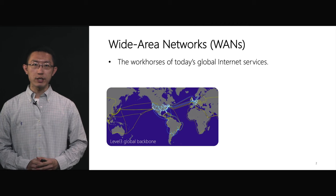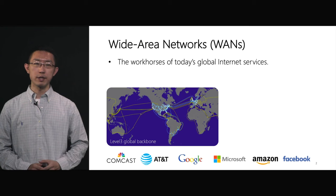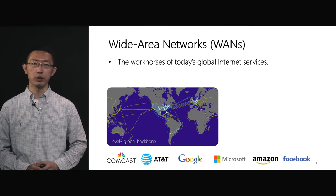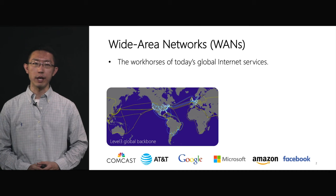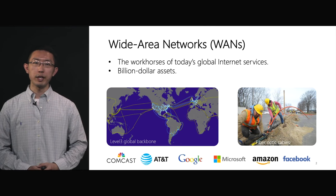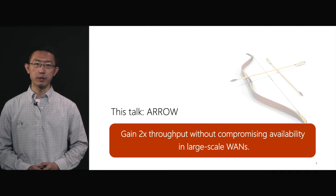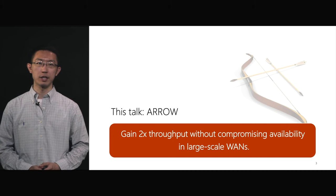Wide area networks are the workhorses of today's global internet services. All major online service providers like Comcast, AT&T, and Google own and operate their private WANs. All these global scale backbones are built using optical fibers across continents and oceans. Because building and maintaining a global scale network costs billions of dollars, it is important for WANs to be efficiently utilized. In this talk, I will present a novel system that improves the network throughput by a factor of two without compromising availability in large scale WANs.